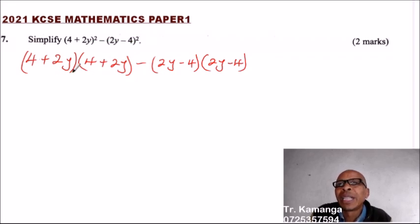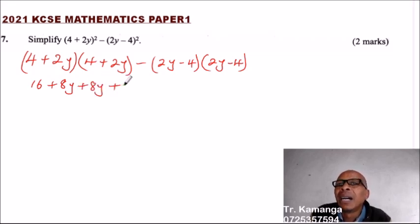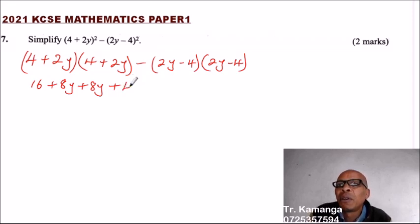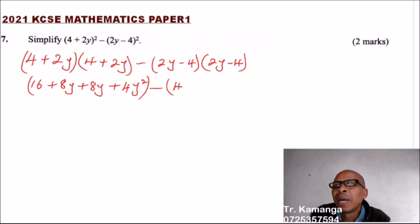You multiply 4 times 4, that gives you 16. Then 4 times 2y gives you 8y, and 2y times 4 is another 8y, so that's 8y plus 8y. Then 2y times 2y gives you 4y squared.